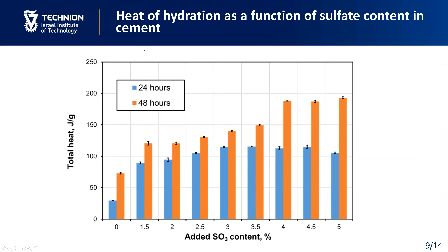Here are the first results: total heat of hydration at 24 hours and 48 hours as a function of sulfate content. As seen from the graph, heat of hydration after 48 hours increases monotonically with increase of sulfate content. However, this trend is different for the total heat at 24 hours, which demonstrates a maximum around 3.5% sulfate content. Apparently, this maximum heat indicates the optimal value in cement, especially considering that belite has a low heat of hydration.